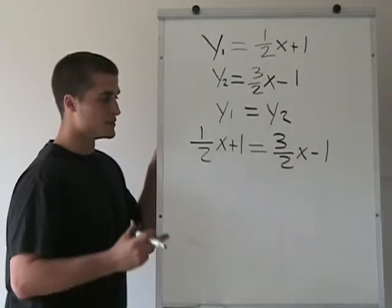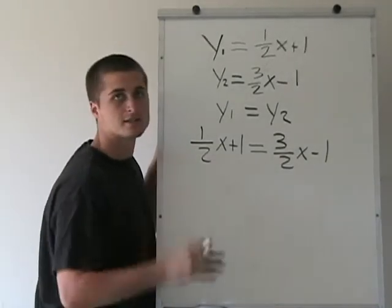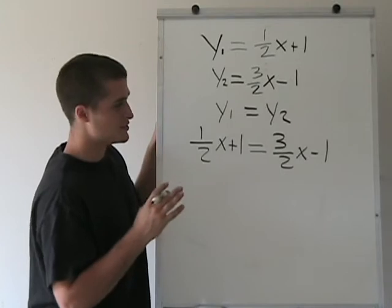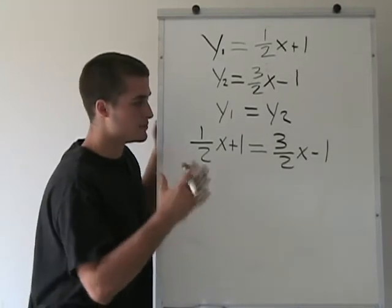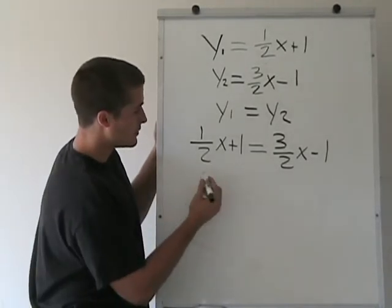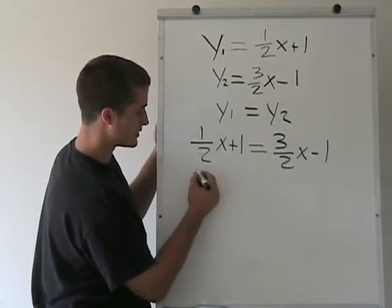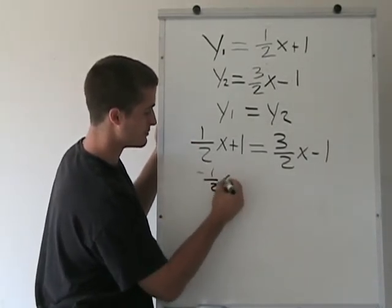And now what we're going to do is solve for x. This is a little different from other equations you saw because there's an x on both sides. But what we're going to do is get x on the same side and isolate it. So we're going to subtract 1 half x from both sides.